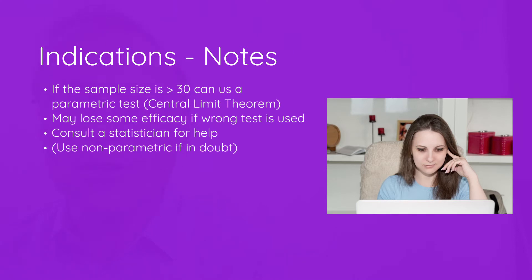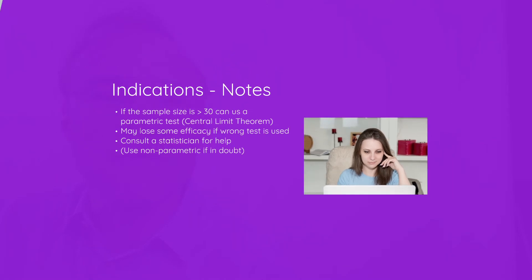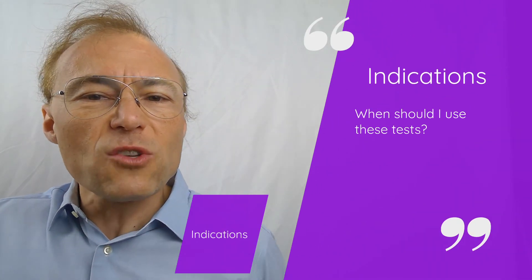When in doubt, it's best to just use non-parametric testing. Look out in your study: if you have a small sample size and the sample is from a population that is not known to be normal, then you should consider non-parametric studies.